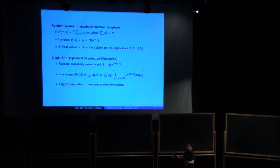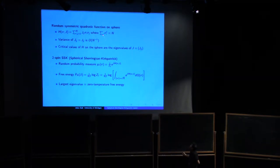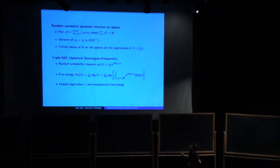This is exactly the eigenvalue problem in the following sense: if you look at the critical values of H on the sphere with Lagrange multiplier, the derivative equals lambda times sigma_i, which is exactly the eigenvalue–eigenvector problem. So the critical values of this quadratic function on the sphere are exactly the eigenvalues of J.